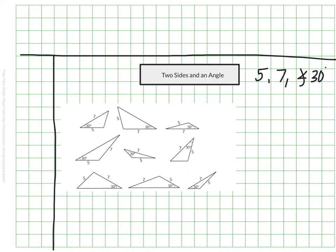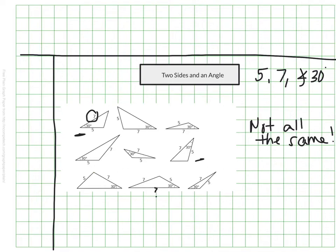Looking at an image showing triangles you could make with those measurements, it appears there are maybe nine possible triangles. Some do look like reflections of each other, but there are also significantly different triangles — one where 7 is the long side, and one where the unknown side is the longest. That's a totally different triangle. So if someone only has the restriction of two sides and an angle, there would be wiggle room in how to create that triangle. There are multiple possibilities, meaning we would not have one unique triangle.